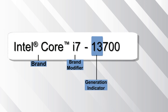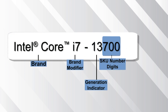Next is the Generation Indicator. When a processor has 4 or 5 digits, the first one or two digits represent the generation. Next to it is the SKU numeric digits — a higher SKU within otherwise identical processor brands and generations will generally have more features.